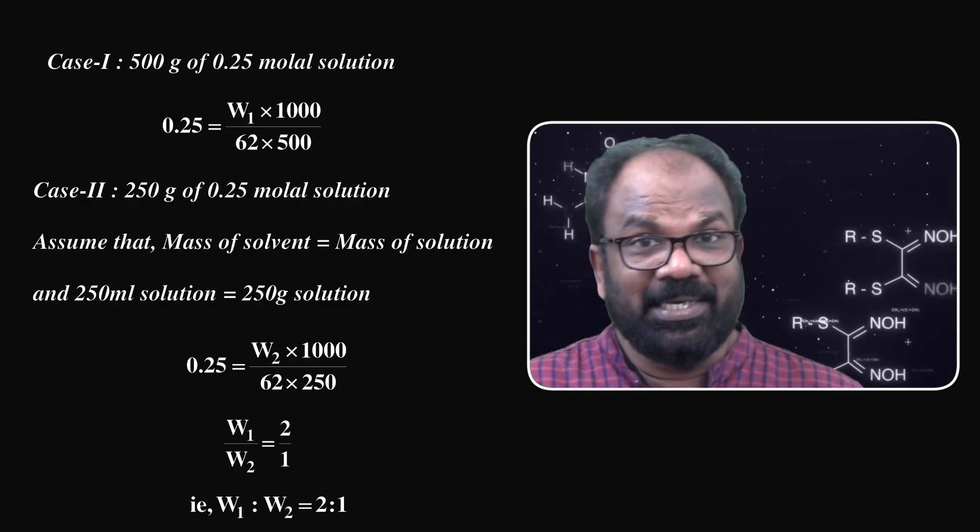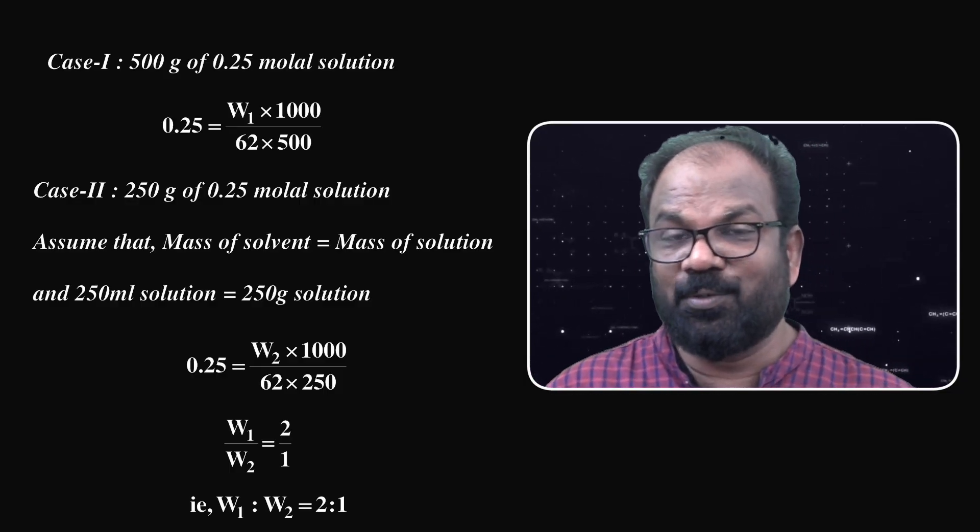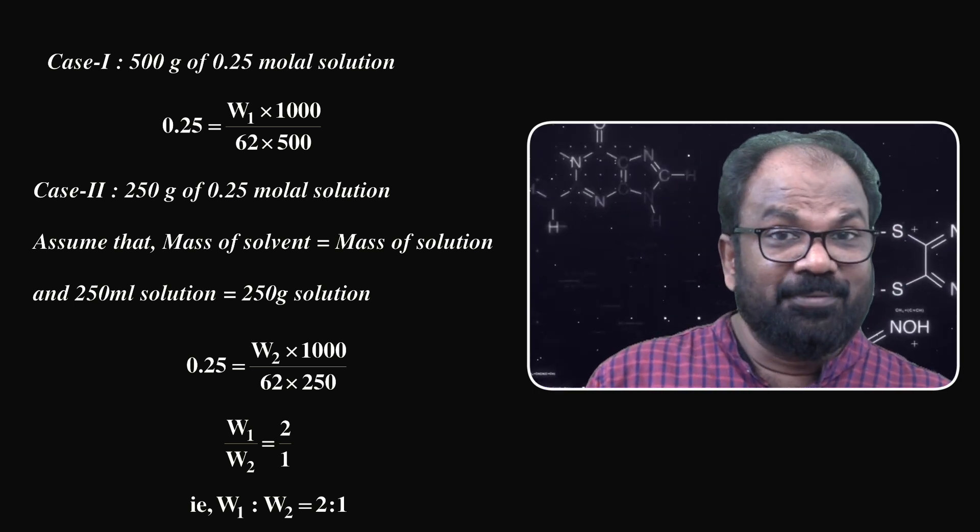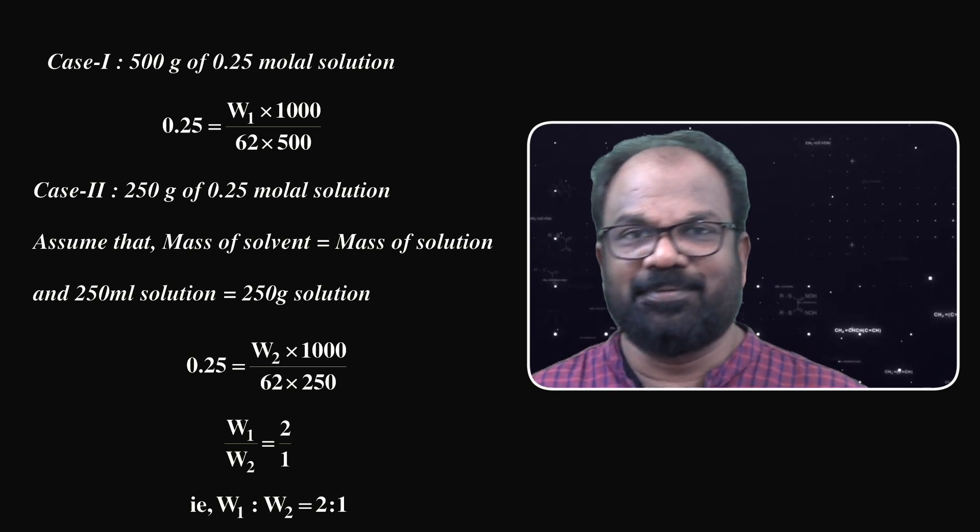In this question, two solutions are prepared by dissolving ethylene glycol and these two solutions have the same molality. In the first case, we need to prepare 500 gram solution having molality equal to 0.25, and in the second case we need to prepare 250 ml solution having the same molality equal to 0.25.